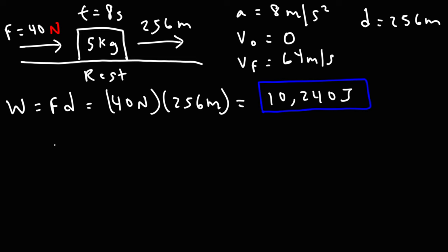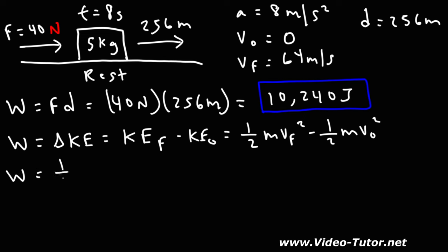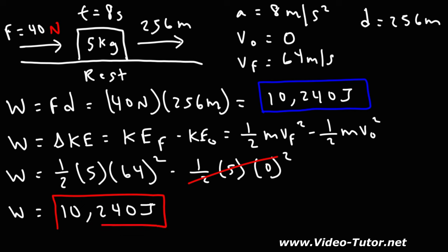Now let's use the work-energy theorem to calculate the work done by the 40 newton force. Work equals one half M V final squared minus one half M V initial squared. The mass is 5, the final velocity is 64, and the initial velocity is 0, so the initial kinetic energy term disappears. The work is simply equal to the final kinetic energy: 0.5 times 5 times 64 squared gives the same answer of 10,240 joules. Those are two simple ways to calculate the net work done by a force — using force times displacement, or calculating the change in kinetic energy.